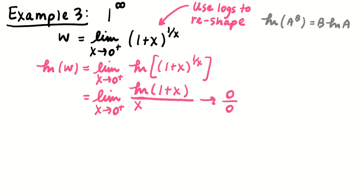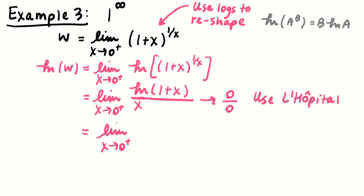Using L'Hôpital's rule, this equals the limit as x approaches 0 from the positive side of the derivative of ln(1 plus x), which is 1/(1 plus x), divided by the derivative of x, which is 1. So this is 1/1/1 — a limit of 1. So ln(w) equals 1, meaning w equals e.